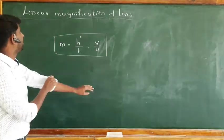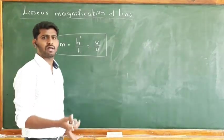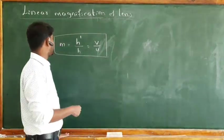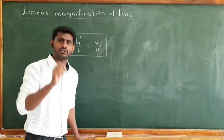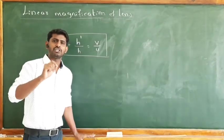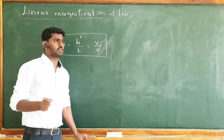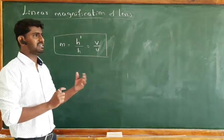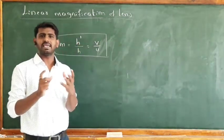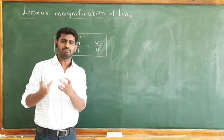The definition of linear magnification — whether for a lens or a mirror — is: magnification is the ratio of the size of image to the size of object. Magnification is a relative term; it explains the size of the image with respect to the object.